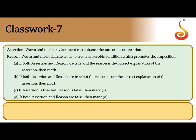The seventh question is an assertion-reason type. The assertion states that a warm and moist environment can enhance the rate of decomposition — this is true. The reason states that warm and moist climate leads to anaerobic conditions — this is not entirely true. So assertion is correct but the reason is false, making the correct answer option C.